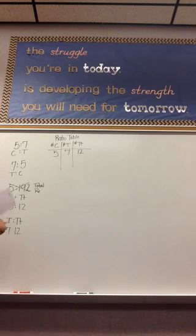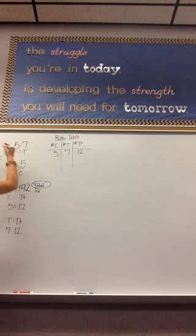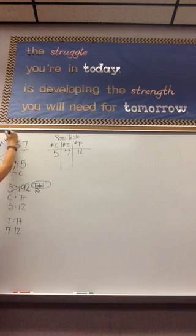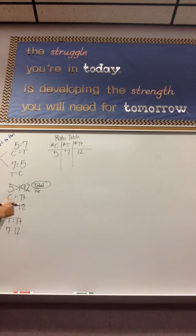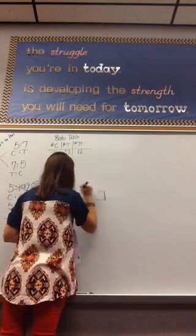Okay. Step B says to make a tape diagram to represent the part-to-part ratios. Part-to-part. Well, if it's just the parts, it's not including the total. So these two are our part-to-part. So we're going to draw a tape diagram to represent that. So B is drawing a tape diagram.